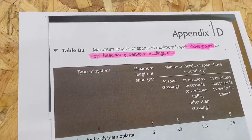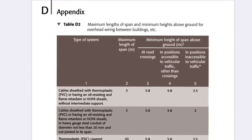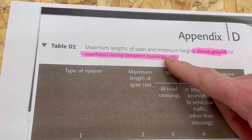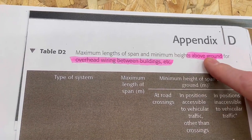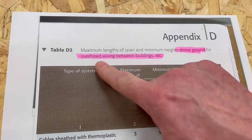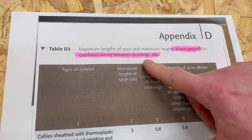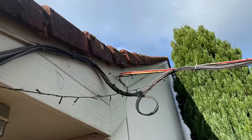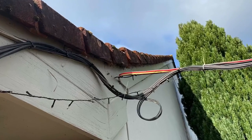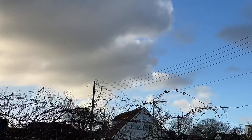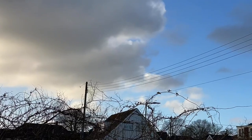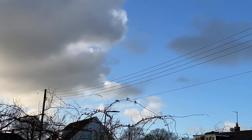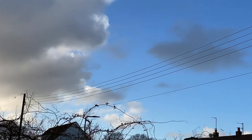I've brought in a blown-up version and also made some highlights on it. The table covers the minimum length of span and minimum height above ground for overhead wiring between buildings. We'll be talking first about the catenary wire, but there are some other types that you'll see walking around your town or village that also have cables above ground.